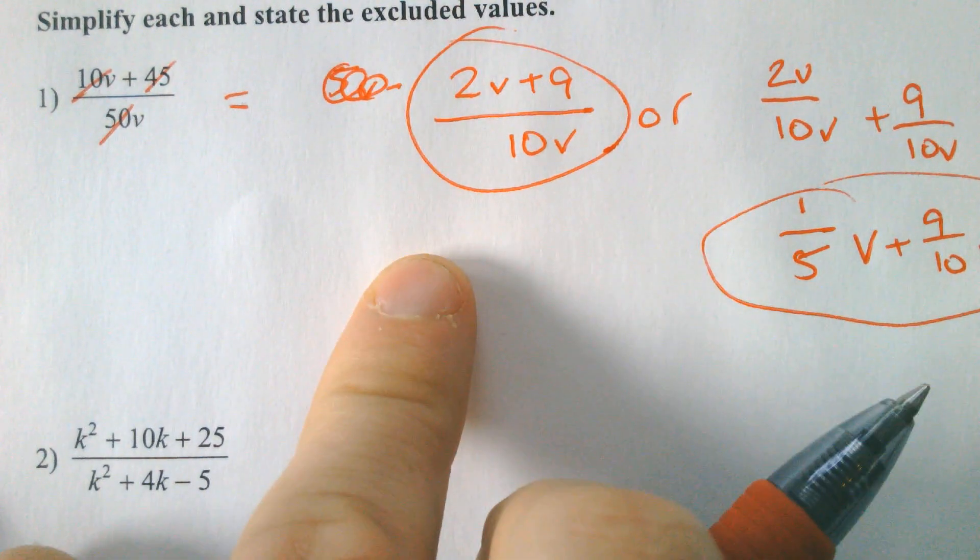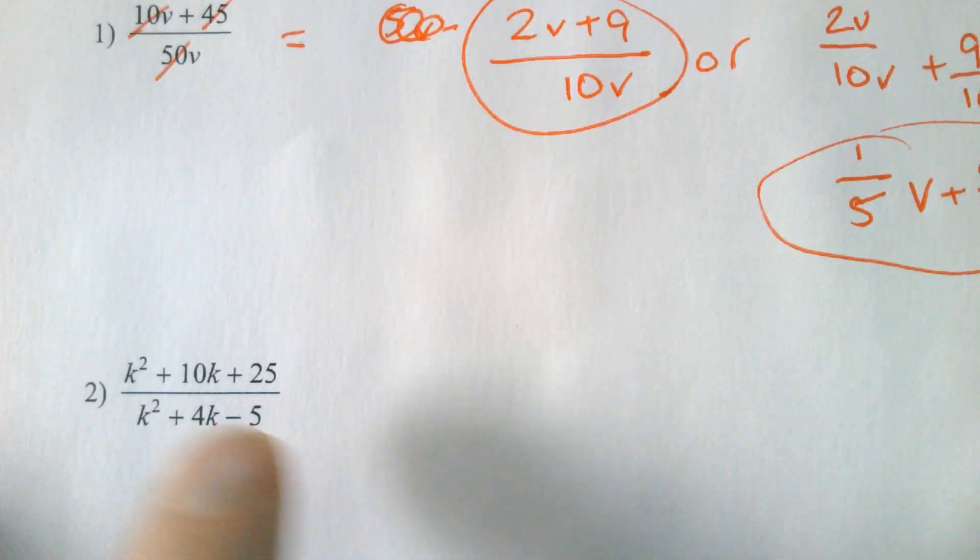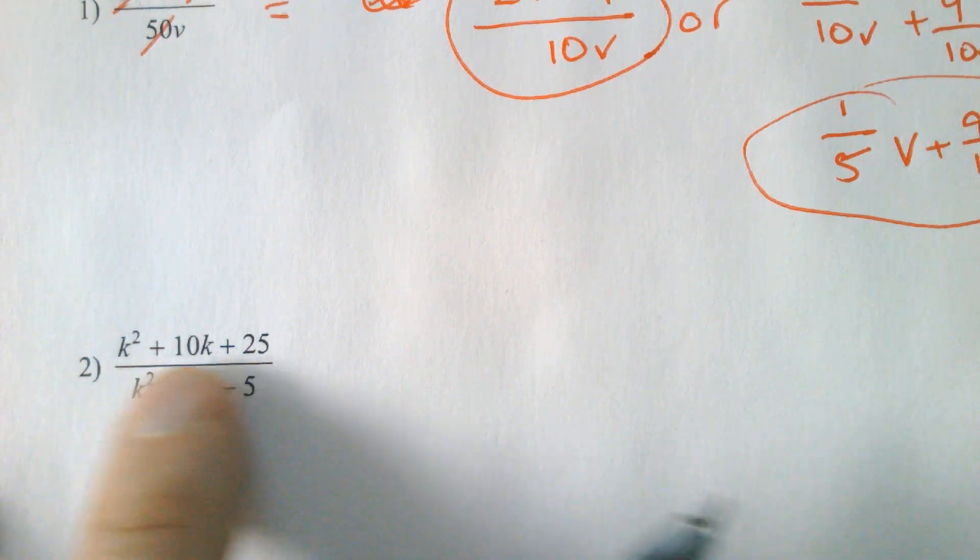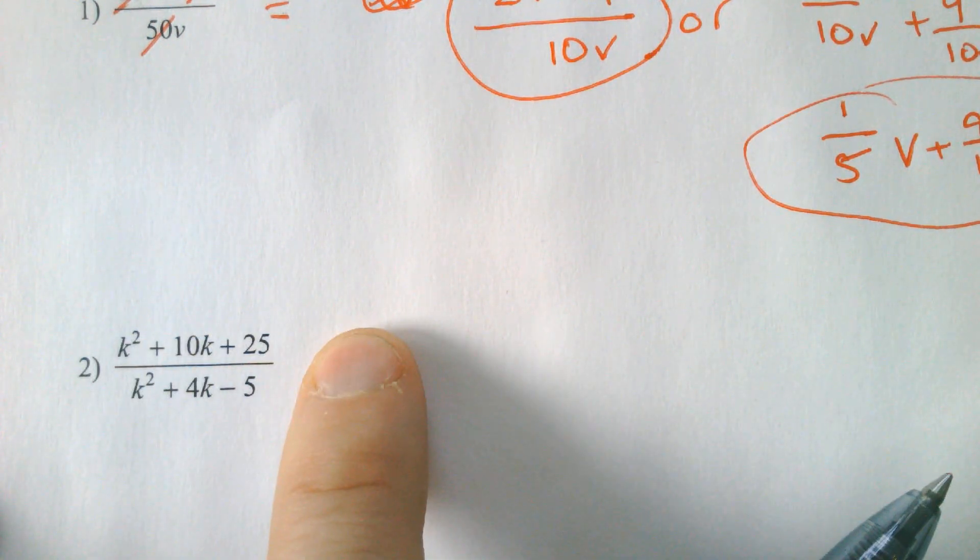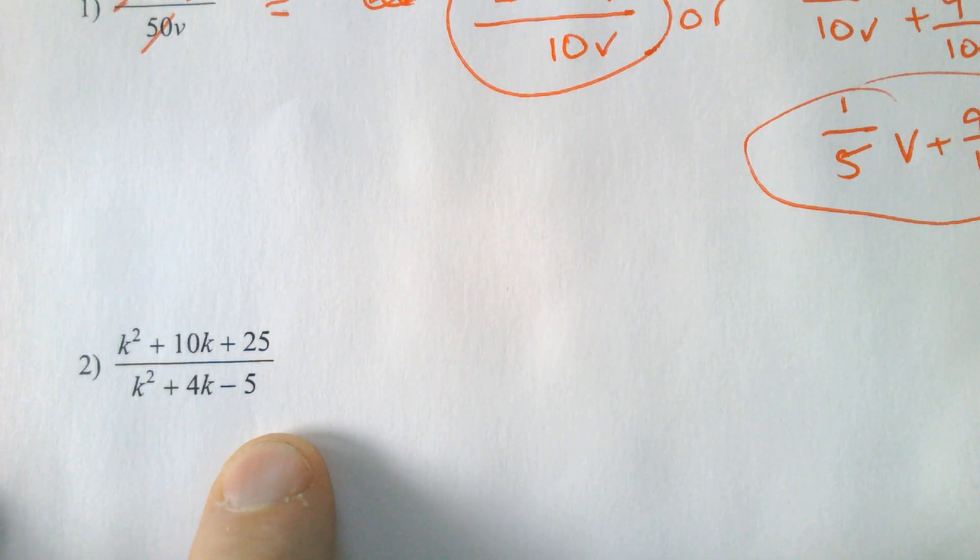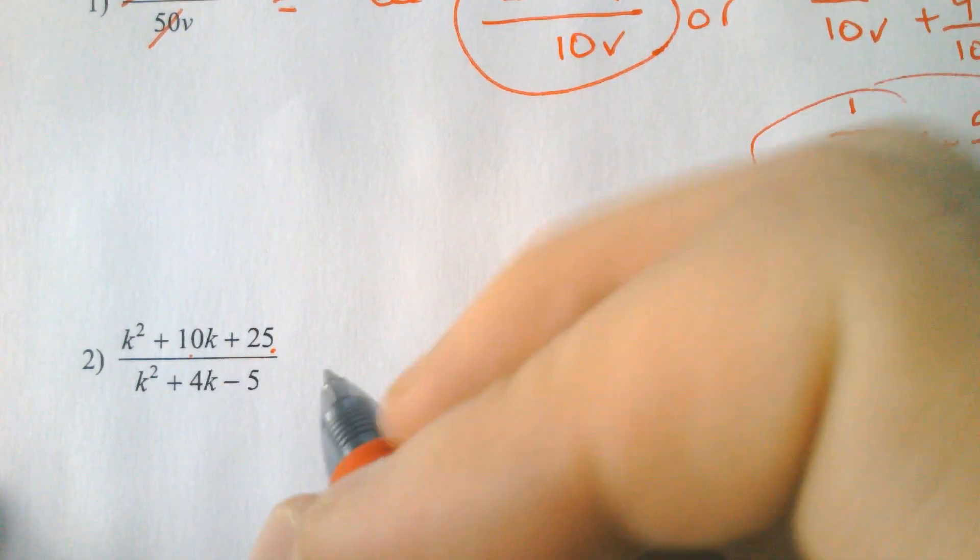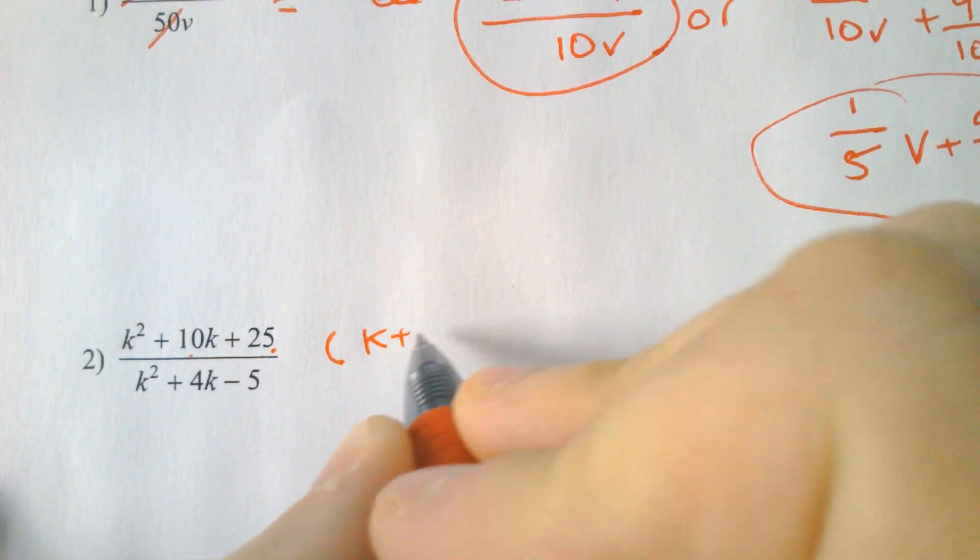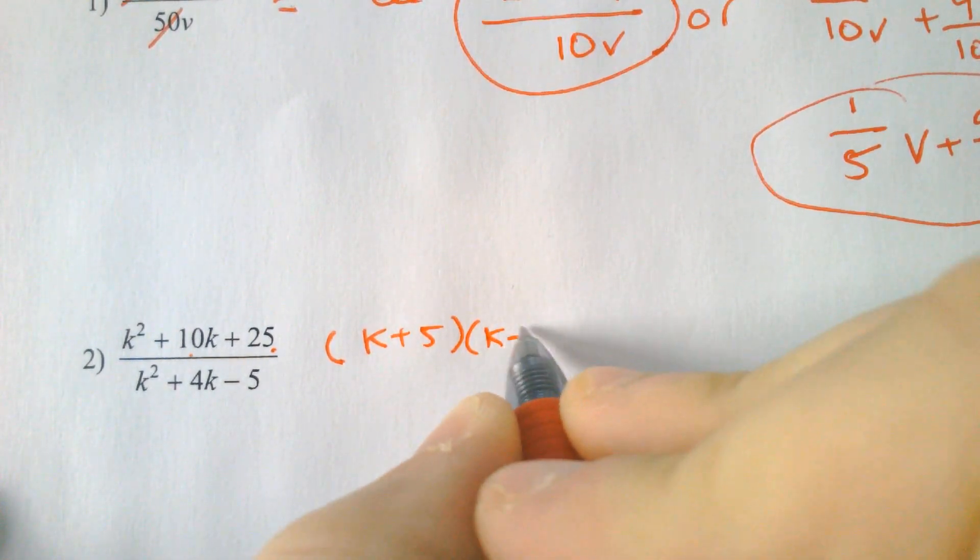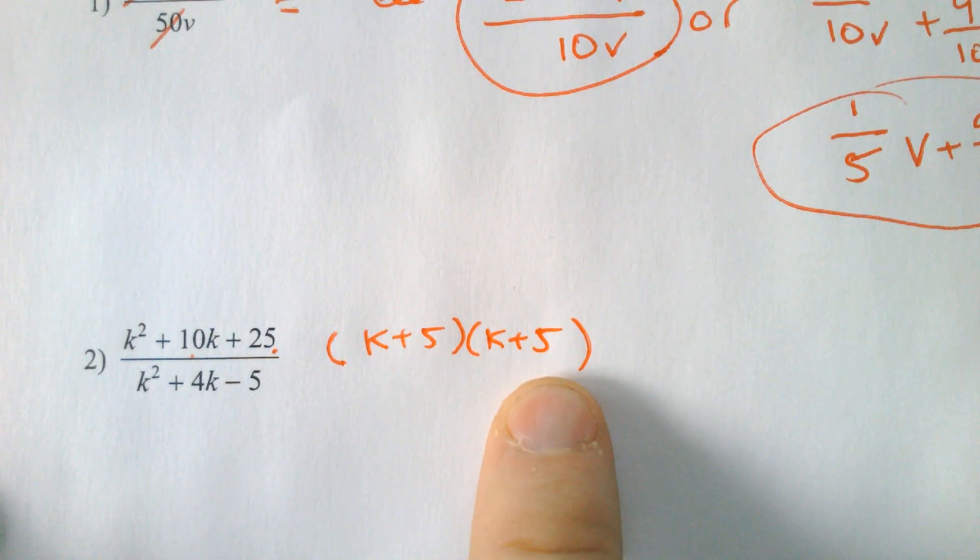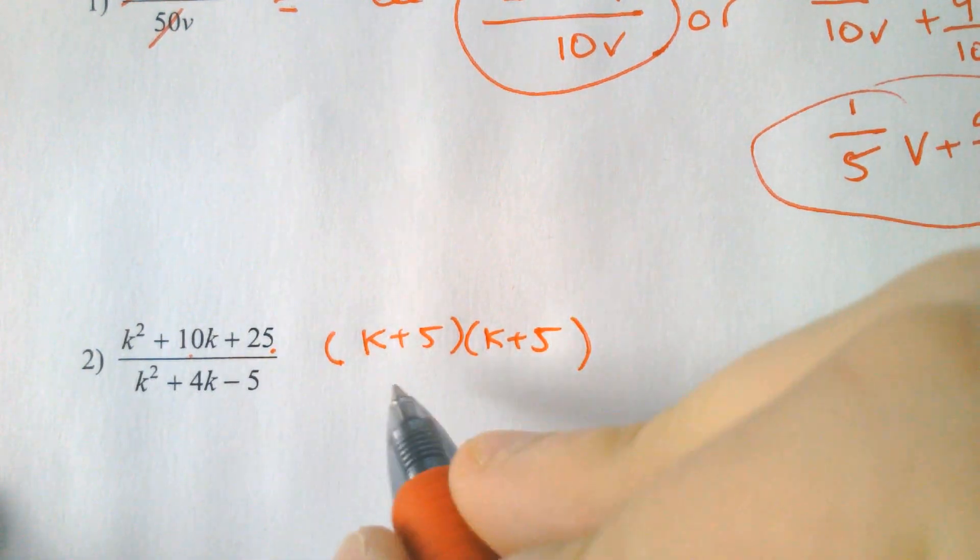But this is an abnormal type of rational expression. The majority of them that you're going to see are going to be like number 2, where you have to factor the top of the fraction and factor the bottom of the fraction. So what multiplies to 25 but adds to 10 is 5 and 5 multiply to equal 25, but add to equal that middle term, which is 10.